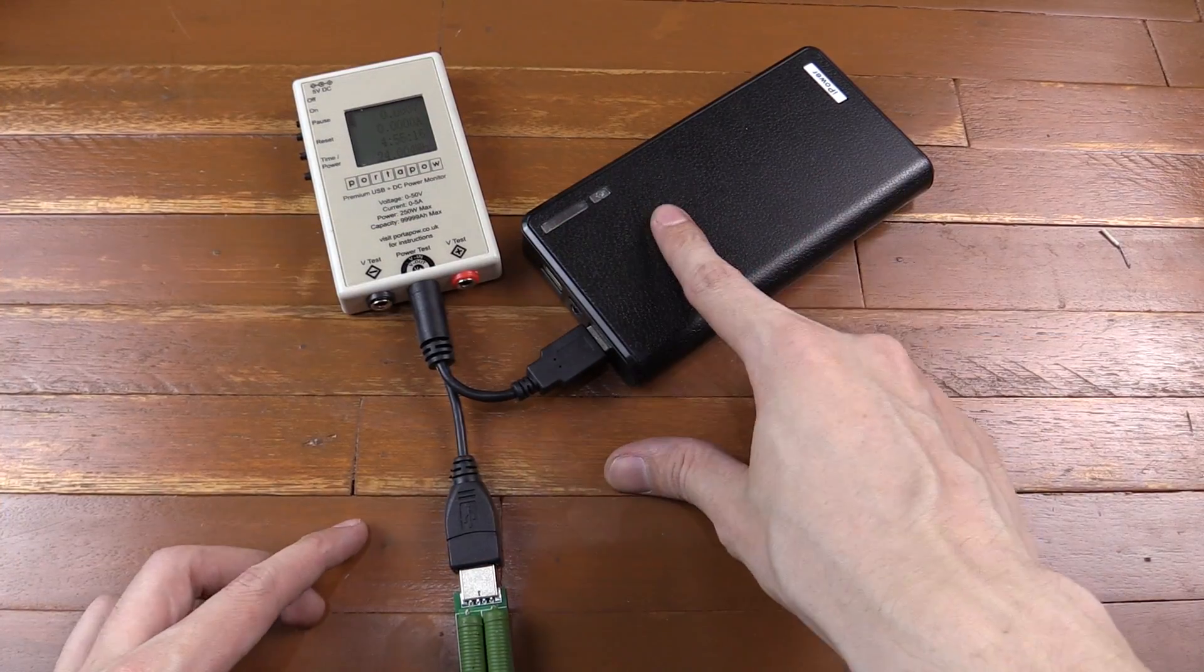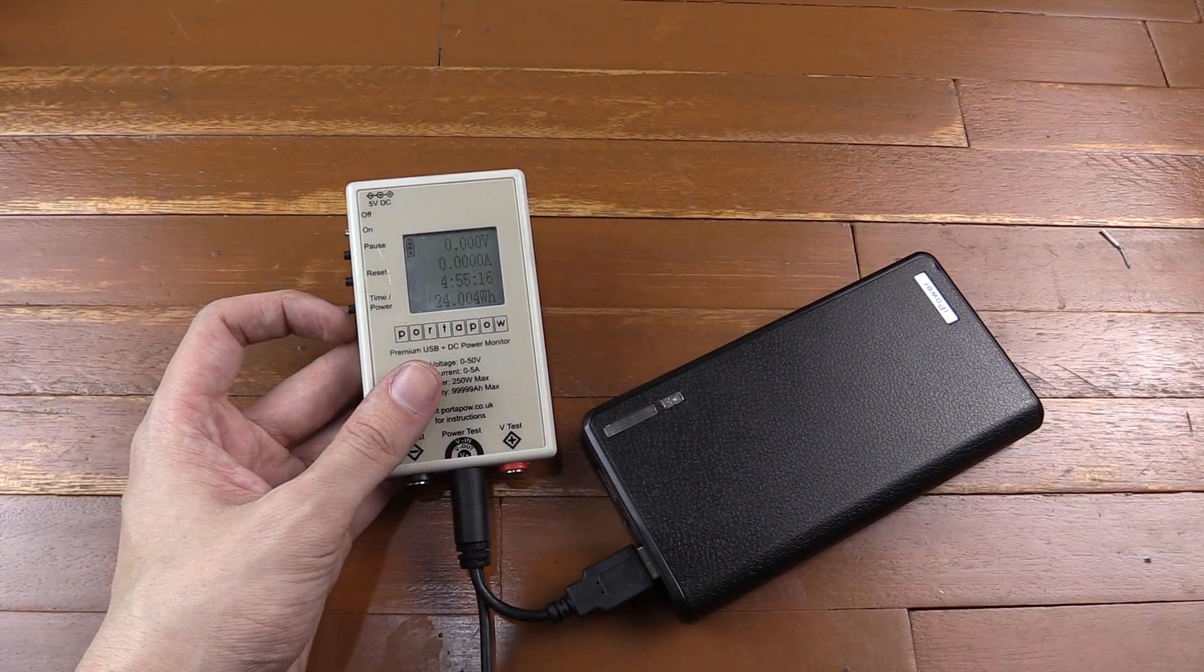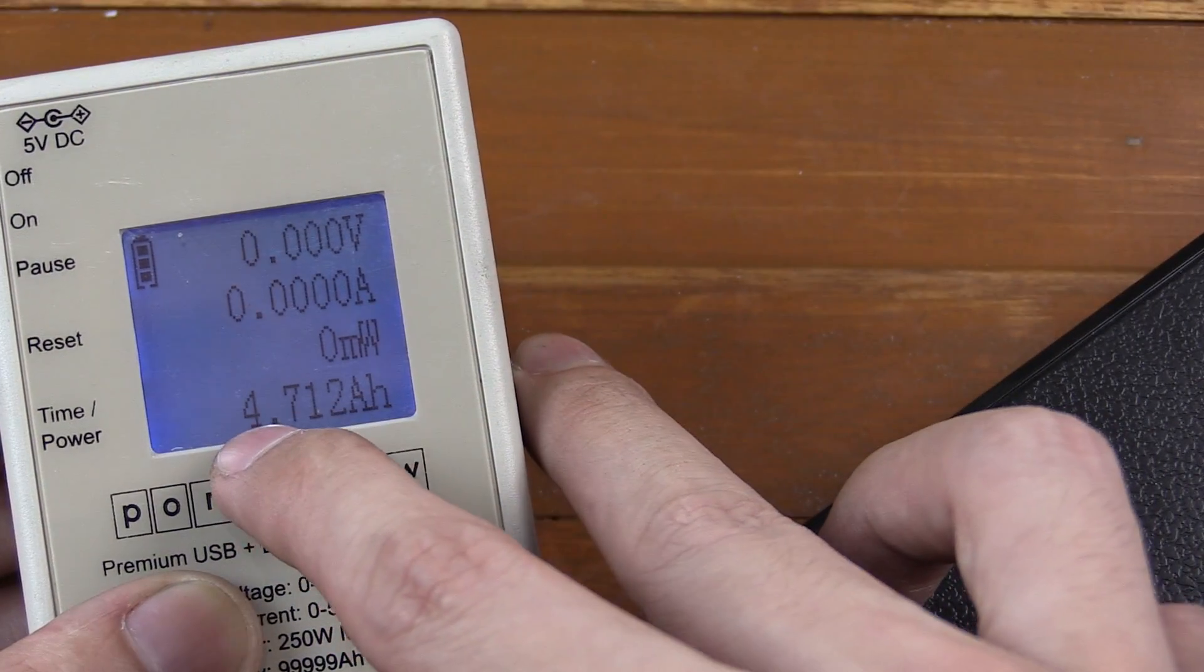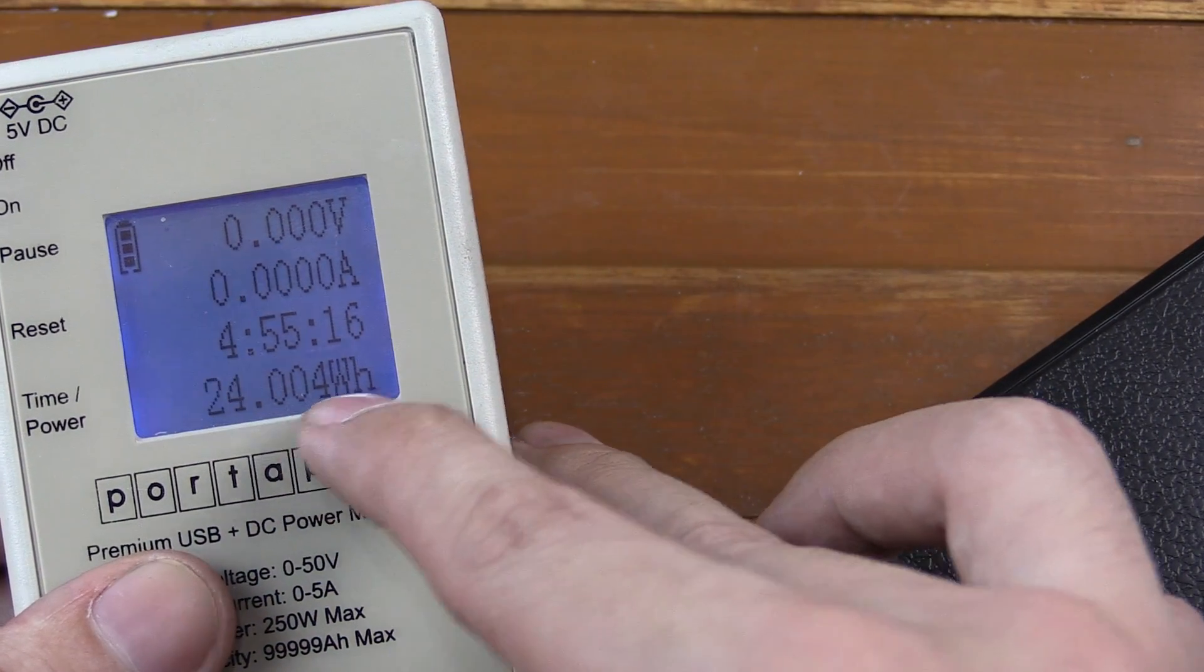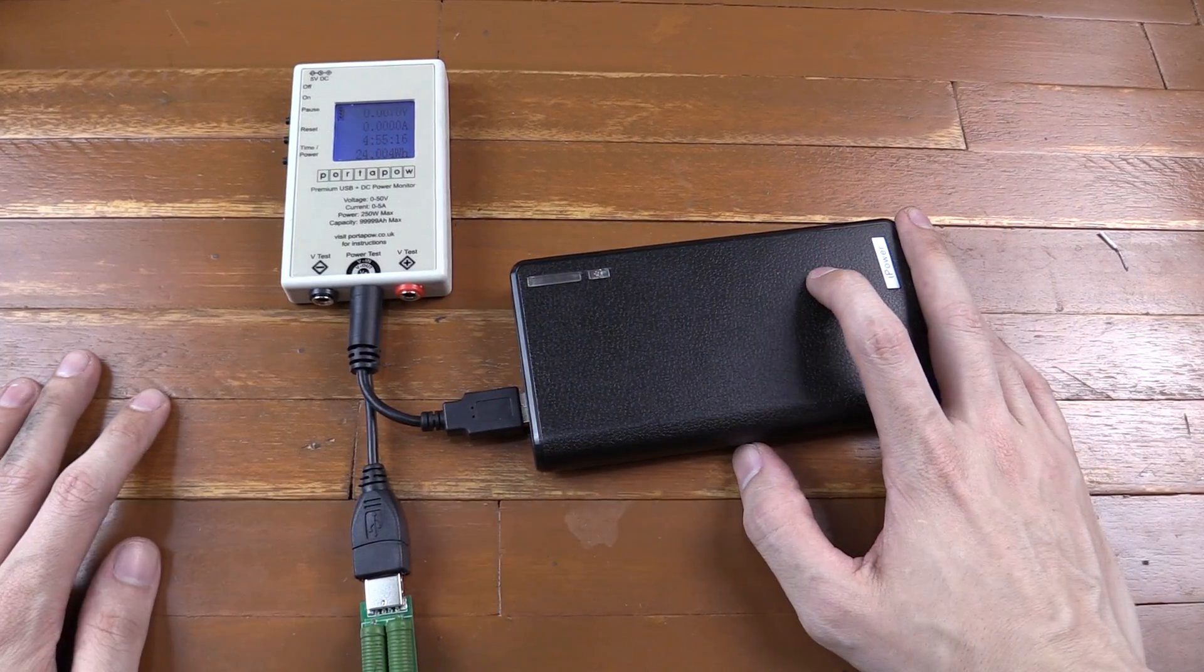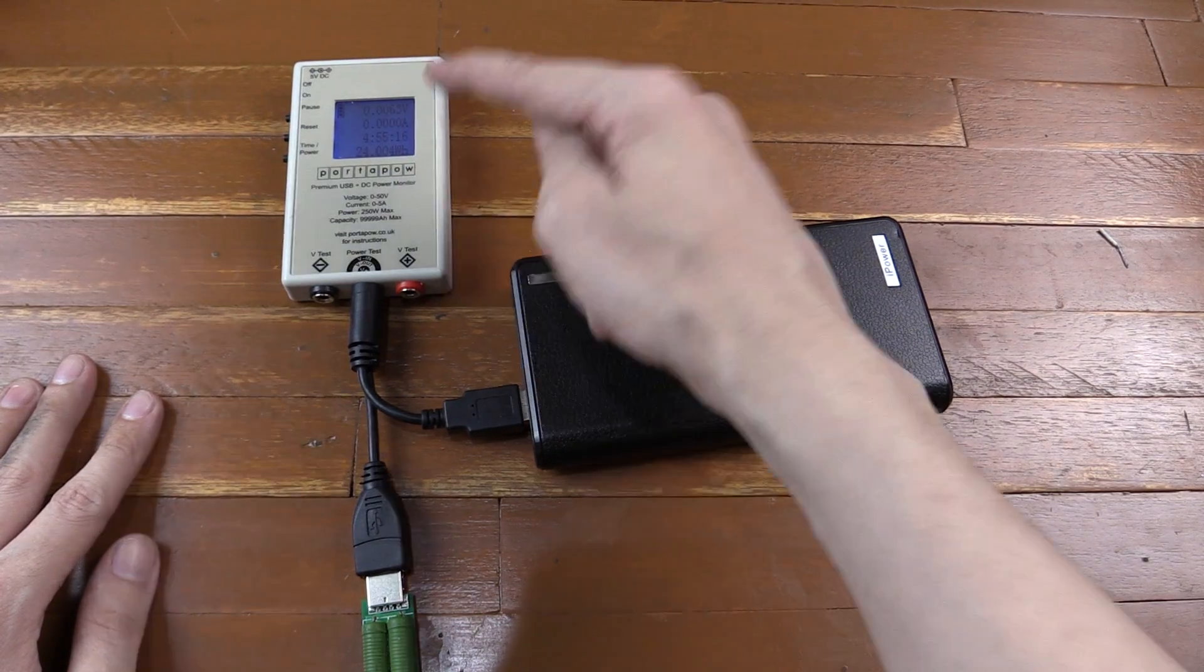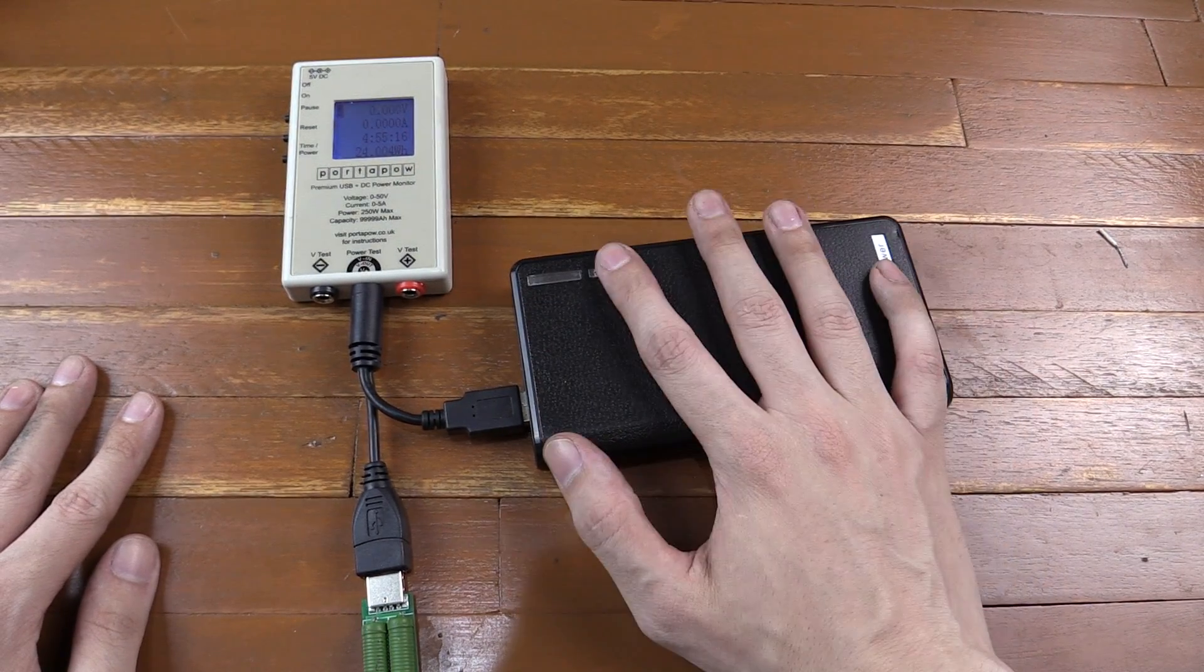So the power bank has stopped outputting power. And let's zoom in on the watt meter and see how much we actually got out of it. So you can see we drew 4,712 milliamp-hour, or 24 watt-hours. So 24 watt-hours is a long, long way off 111 watt-hours. Now you might be wondering, how come we managed to put in a lot more than what we got out? So let's write down all these figures and then look at them side by side and work out what's actually happened here.